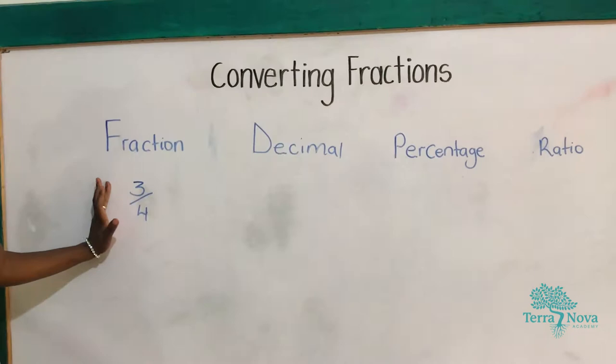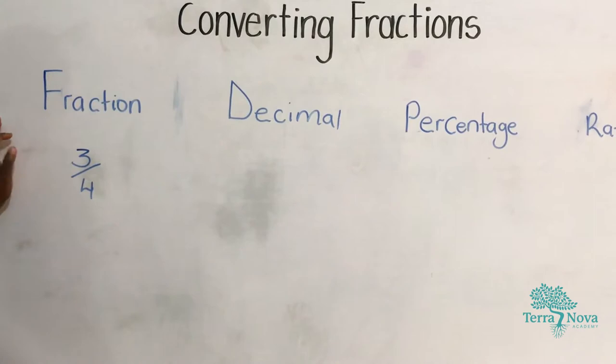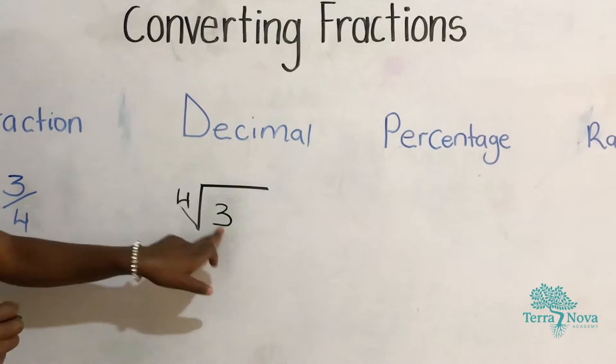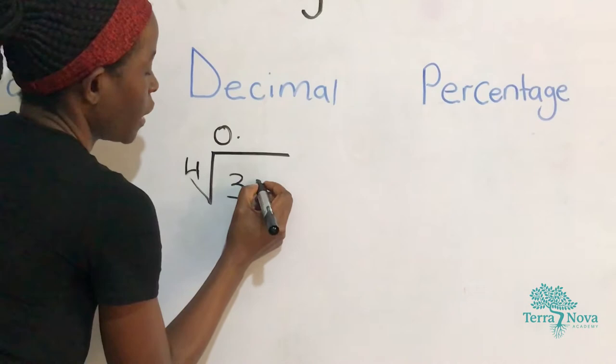Let's work out 3 out of 4 into a decimal. We change a fraction into a decimal by dividing the denominator into the numerator. So we are going to have our division sign. We are going to have our 3 inside and 4 outside. So 3 divided by 4 is impossible. So we are going to put a 0 and a point. So we can add a 0 here to make our numerator become 30.